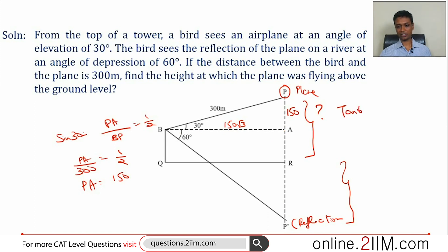Now this triangle BAP'. Tan 60 equals AP' by BA, or AP' equals tan 60 into BA. AP' is root 3 into 150 root 3, which is 150 into 3, which is 450.